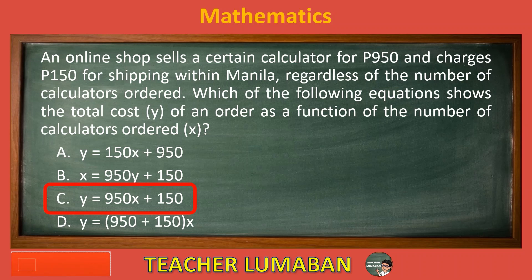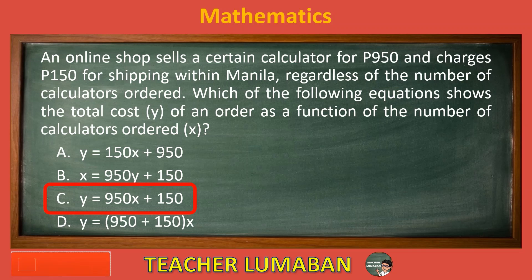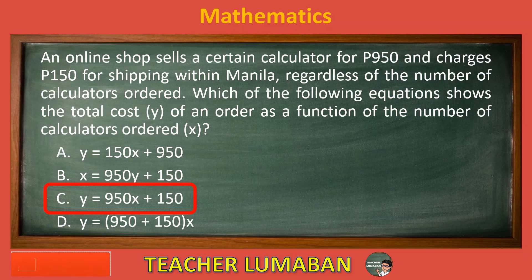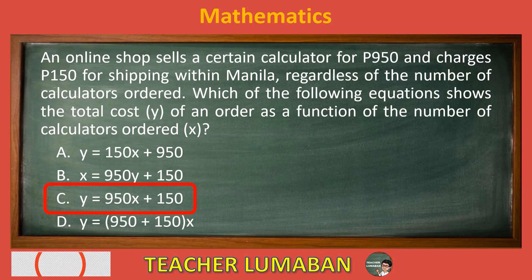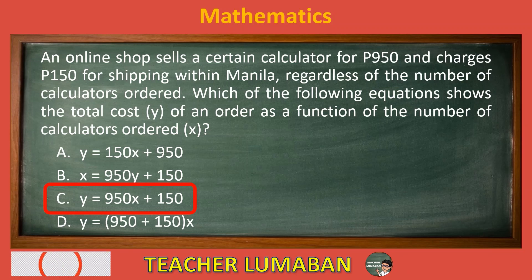An online shop sells a certain calculator for 950 pesos and charges 150 pesos for shipping within Manila, regardless of the number of calculators ordered. Among the following equations, Y equals 950X plus 150 shows the total cost Y of an order as a function of the number of calculators ordered, X.